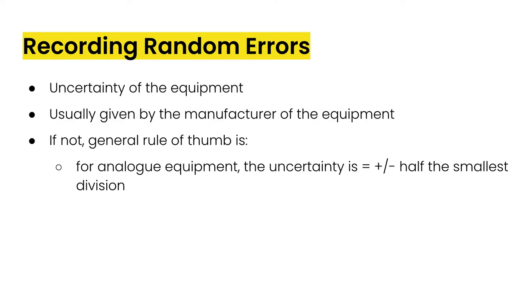So if your ruler has 0.1 divisions, the uncertainty would be plus or minus 0.05. If you have a digital piece of equipment, you can record the uncertainty as plus or minus the smallest measure. So if you have a scale that measures to two decimal places, and measures in 0.01 increments, the uncertainty would be plus or minus 0.01.